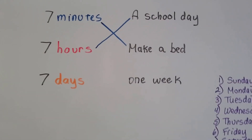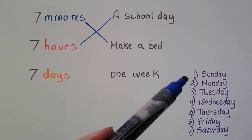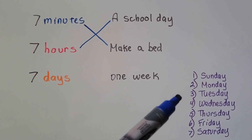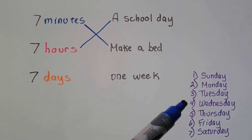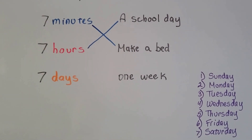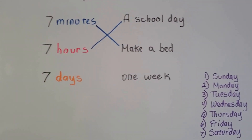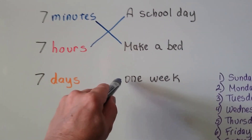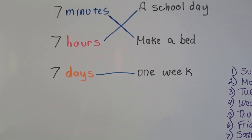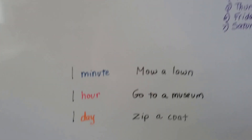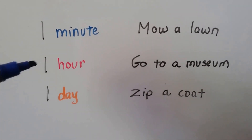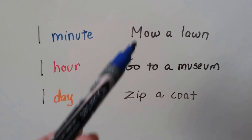There are seven days in one week. The days are Sunday, Monday, Tuesday, Wednesday, Thursday, Friday, and Saturday — seven days in one week.